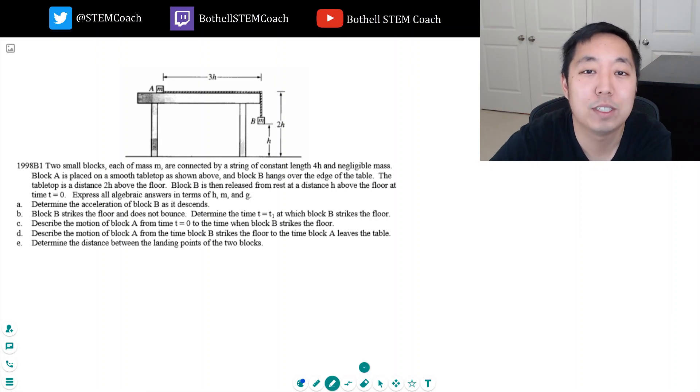Hey guys, this is Alan with Bothell STEM Coach, and today we're continuing with some more AP Physics dynamics questions. Let's take a look at this one. Two small blocks, each of mass M, are connected by a string of constant length 4H and negligible mass. Block A is placed on a smooth tabletop as shown above.